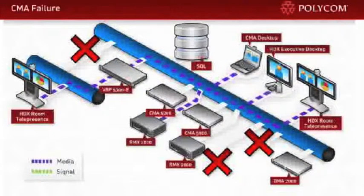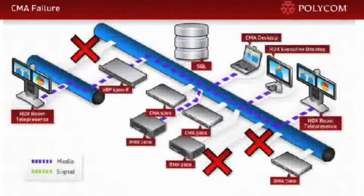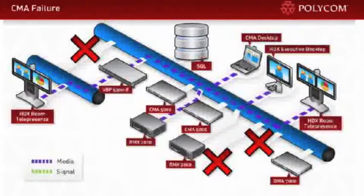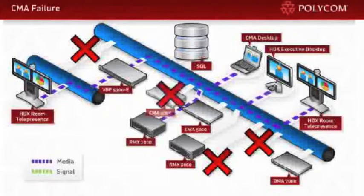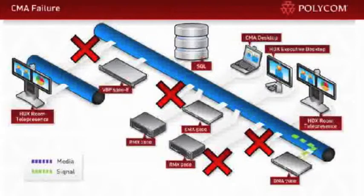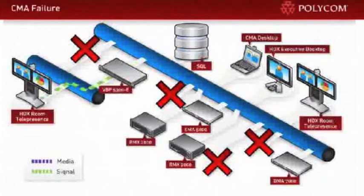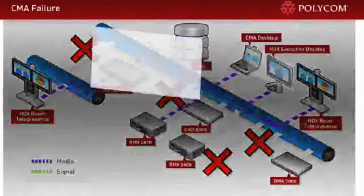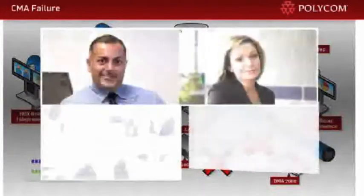Now let's see what happens when CMA management and scheduling goes offline. Here are two CMA servers running in a redundant configuration. Let's disconnect CMA number 1. Automatically, all services are passed over to the secondary server. Once all services restart, users again can simply redial to engage in a point-to-point or multipoint conference.